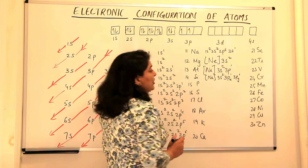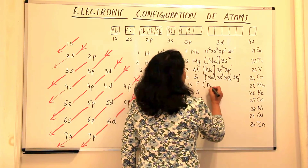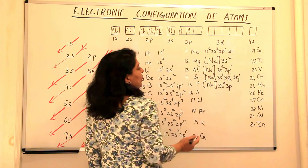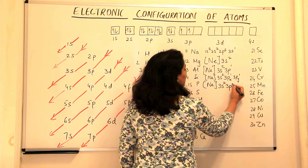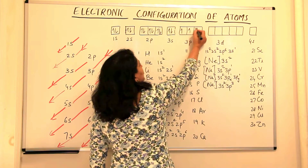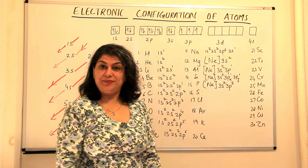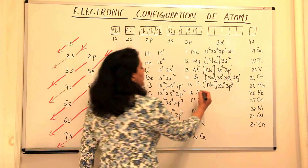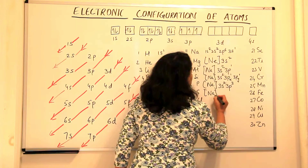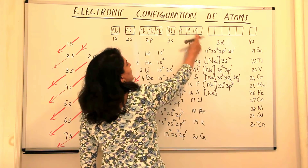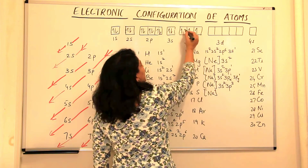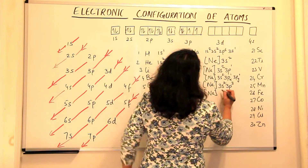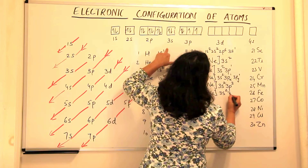Then comes phosphorus, the 15th element. Its configuration is [Ne] 3s2, 3p3 — one electron moves to the third p orbital. Next is sulfur, the 16th element. The 16th electron starts pairing in the 3p orbitals, giving sulfur a configuration of [Ne] 3s2, 3p4.